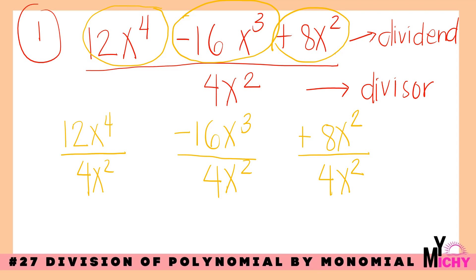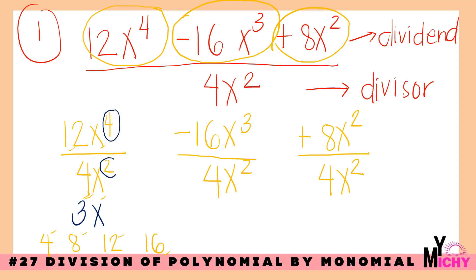So we have: 12x⁴ divided by 4x², negative 16x³ divided by 4x², and positive 8x² divided by 4x². Don't forget the law of exponents when dividing — we subtract the exponents. For the first term: 12 divided by 4 is 3, and x⁴ divided by x² gives x² (4 minus 2 equals 2). Since they are the same sign, the answer is positive 3x².